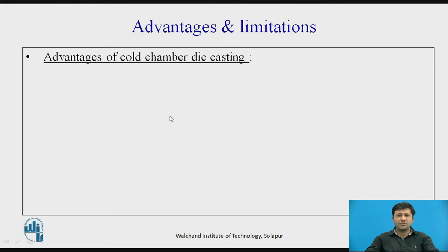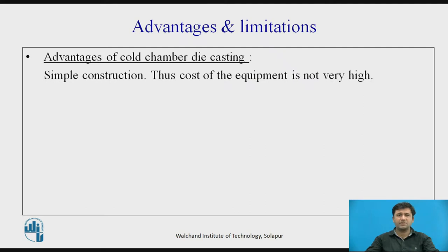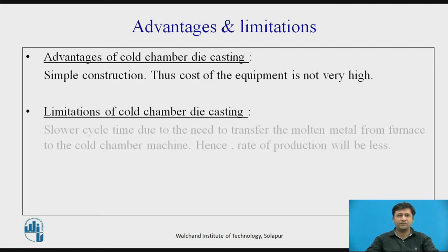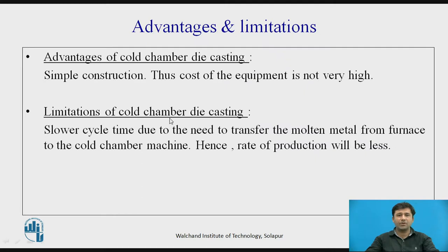Advantages of cold chamber die casting: its construction is simple, and thus the cost of equipment is not very high. Limitations: slower cycle time, due to the need to transfer the molten metal from the furnace to the cold chamber machine. Hence the rate of production will be less, as the metal is melted elsewhere and brought to the die.